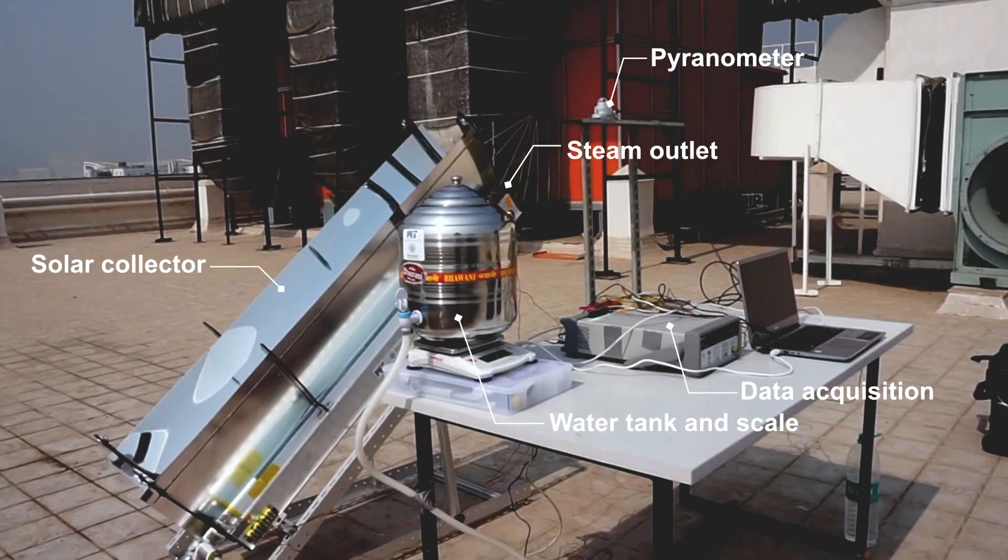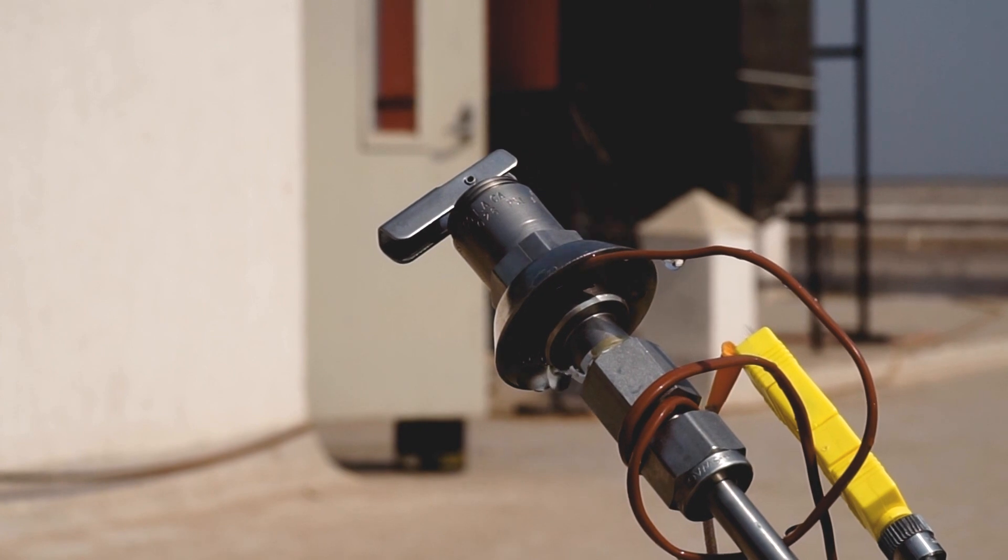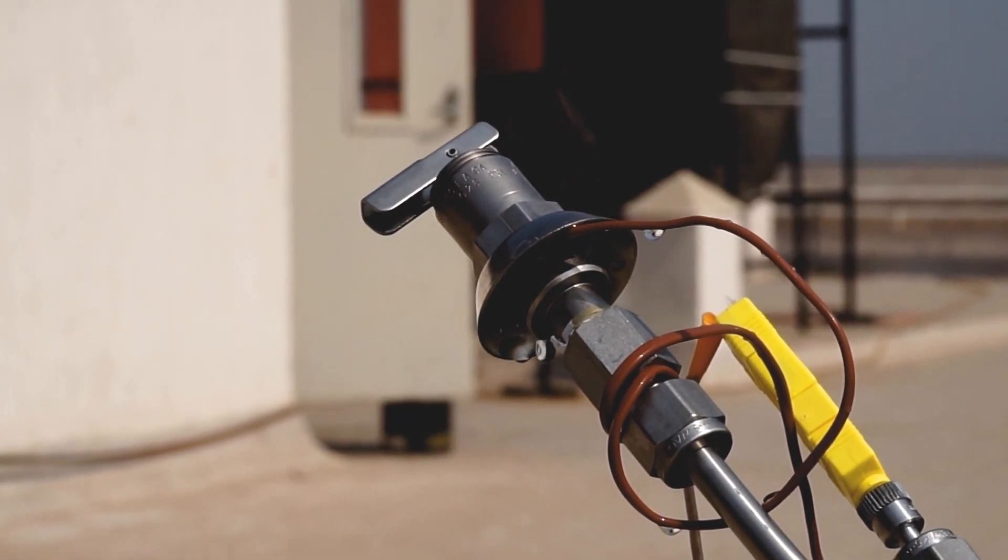Using gravity to feed water from a tank into the plate, the steam then rises to the top of the enclosure and is fed out through another pipe, which carries the pressurized steam to the autoclave. The team tested their prototype in Mumbai, India.